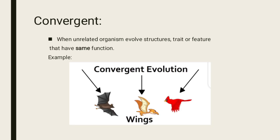The next one is convergent evolution. When unrelated organisms evolve a structure, trait, or feature that has the same function — when two different organisms evolve, they become more and more similar in that function.